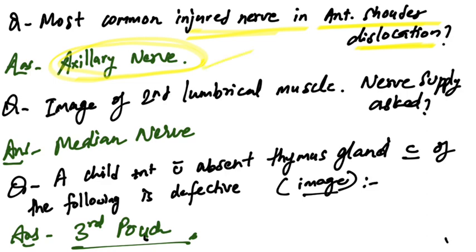An image of the second lumbrical muscle was given and the nerve supply was asked. The second lumbrical muscle is supplied by median nerve.